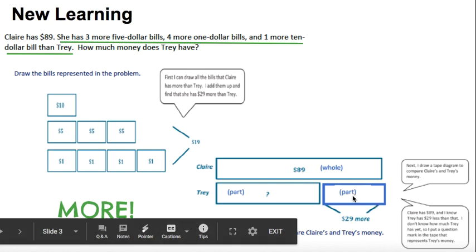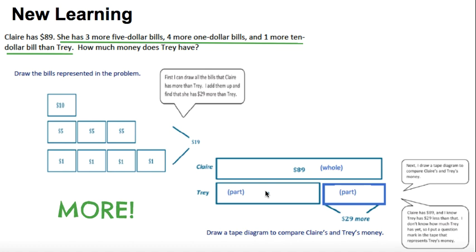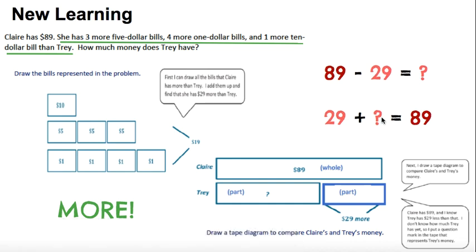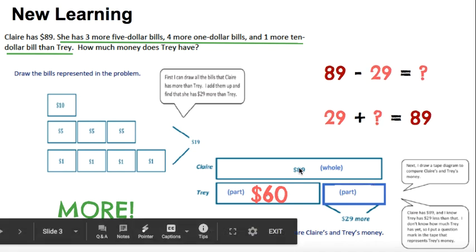So if our whole is $89 — the money Claire has — and she has $29 more than Trey, that's the part we know. We're looking for the missing part of how much money Trey actually has. We can solve this two ways: 89 minus 29 to get the missing part, or 29 plus the missing part to give us our whole. Looking at this, 9 and 9 gives a 0 in the ones place, and 8 minus 2 is 6, so my answer is 60. Trey has $60. That makes sense because 60 plus 29 gives me 89 — Claire's money.